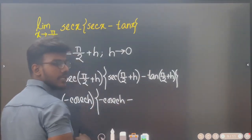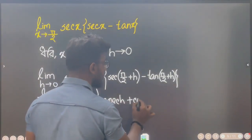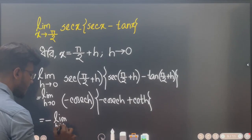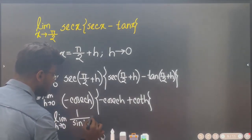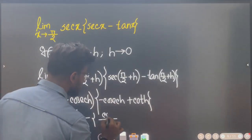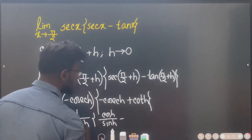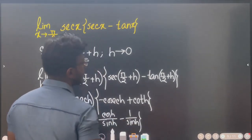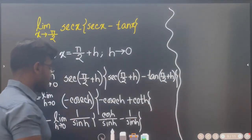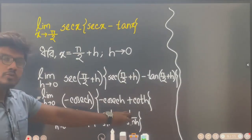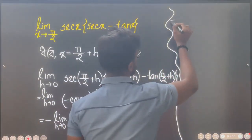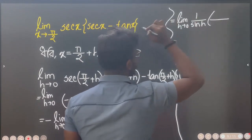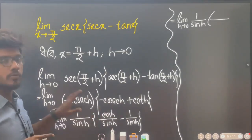cosec h means 1 by sin h. cos h means cos h by sin h. cos h divided by sin h minus cosec h means 1 by sin h. So let's do this — the minus is common. We can do minus: it will be minus minus plus. So we can do limit h tends to 0, 1 by sin h. The minus is common.